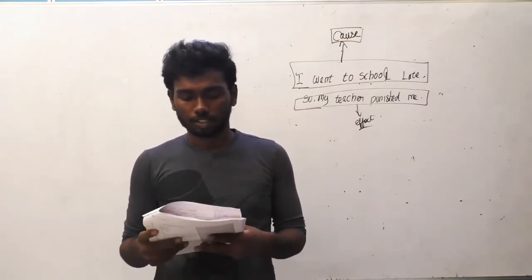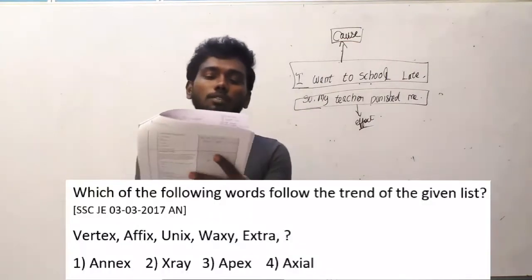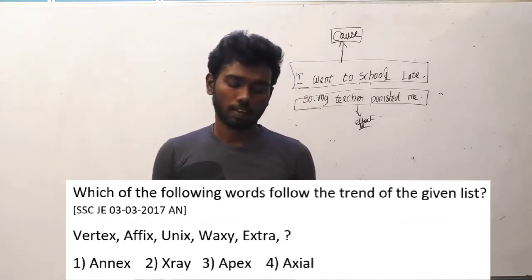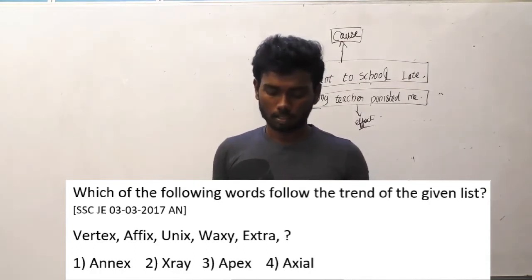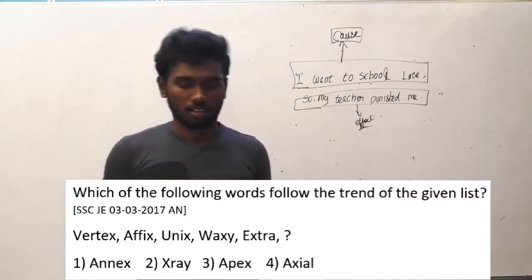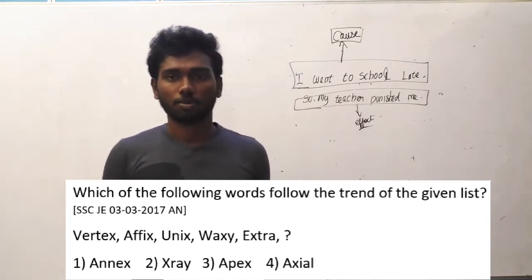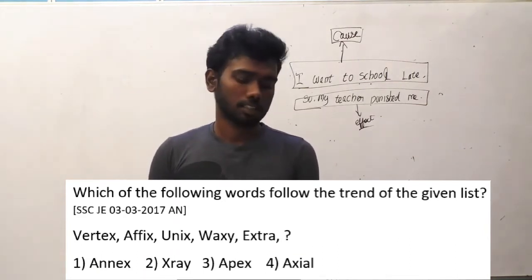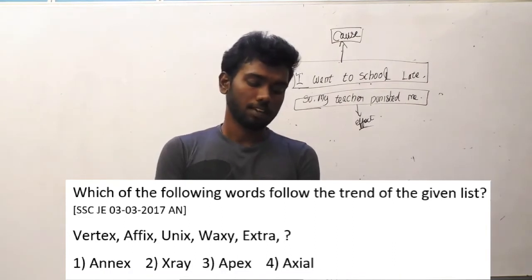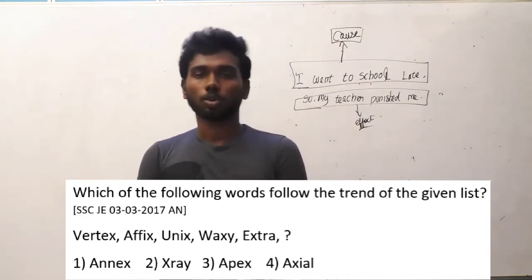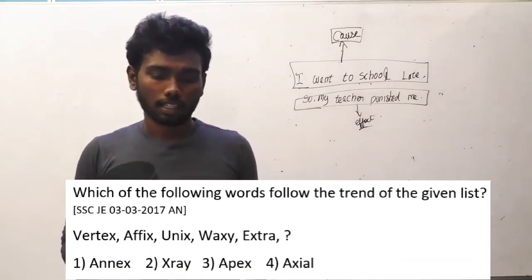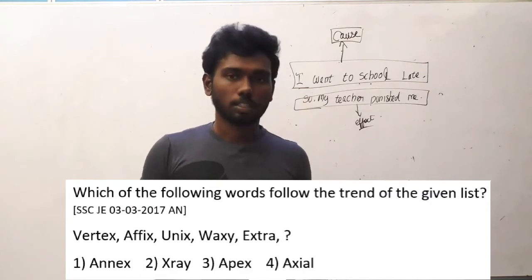Question 30: which word follows the trend of the list vertex, affix, unix, vaxi, extra? Options are annex, x-ray, apex, axial. The logic: the position of the letter X moves one place to the left in each word. In vertex X is 6th, affix 5th, unix 4th, vaxi 3rd, extra 2nd. So the next word must have X in the 1st position. Among the options, only x-ray has X in the first position. So x-ray is the answer.